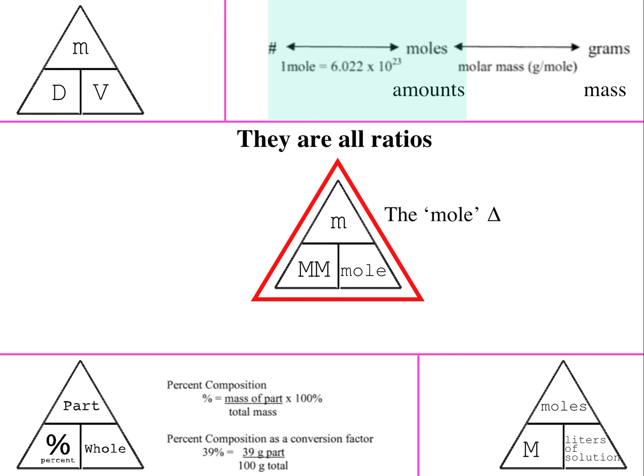Our focus in this tutorial is to look at the mole triangle. Molar mass ratio, mm, is the ratio of mass per amount, where mass will be given in grams and amount will be given in moles. And the mole is a counting device.